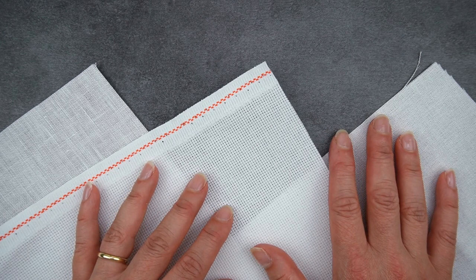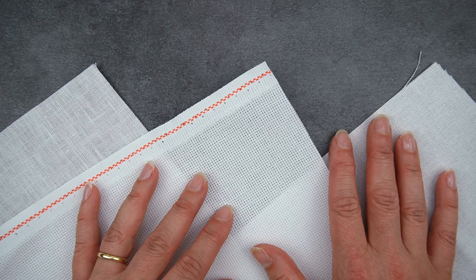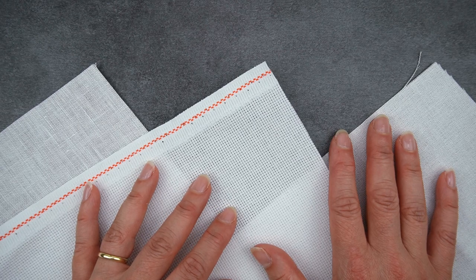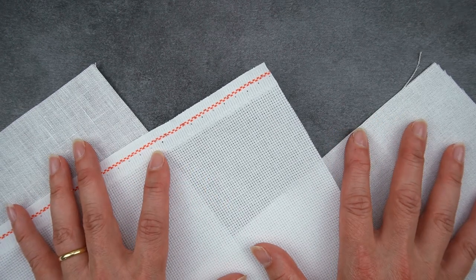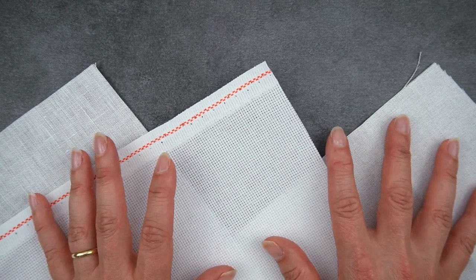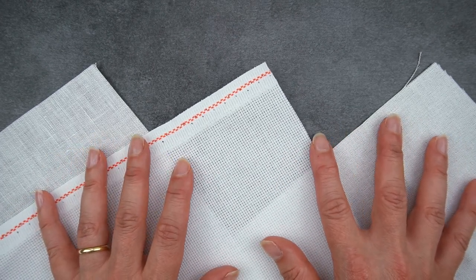And yes the irregular thread thickness of linen can be a little bit harder to work with but the main difference when moving to work with either of these fabrics from Aida is the way you work your cross stitches. So honestly it doesn't really matter which you pick.